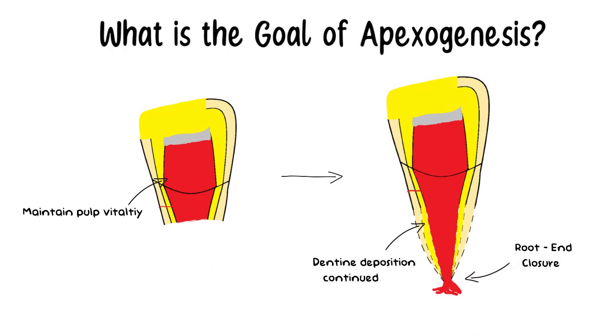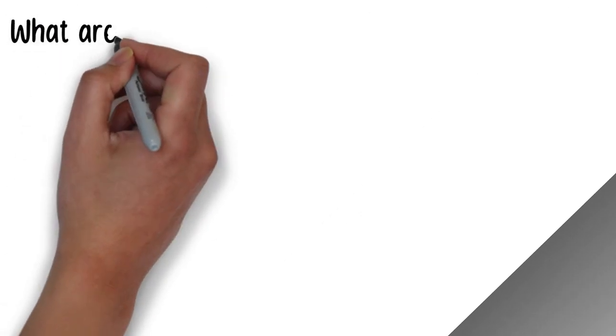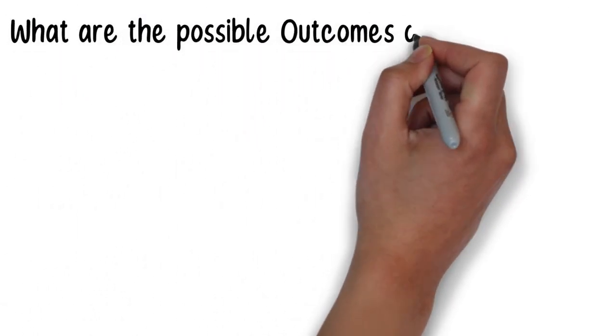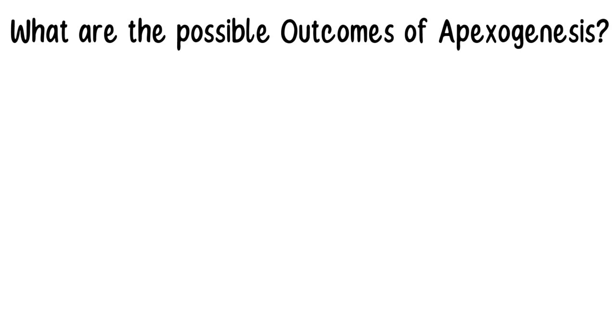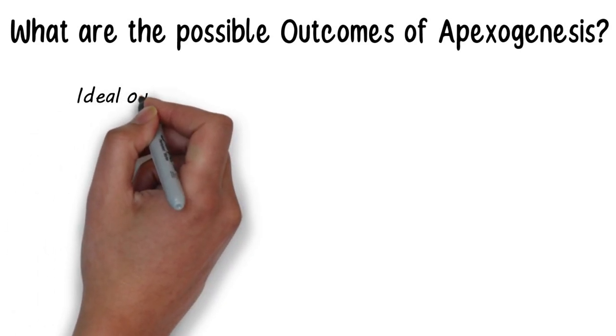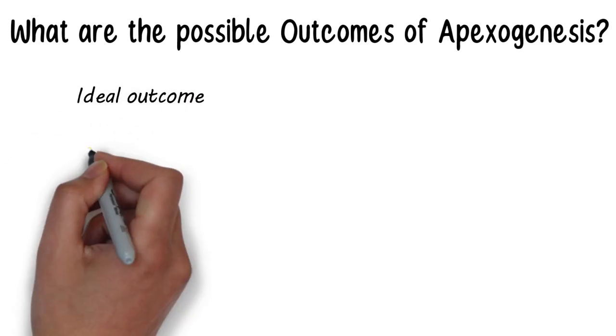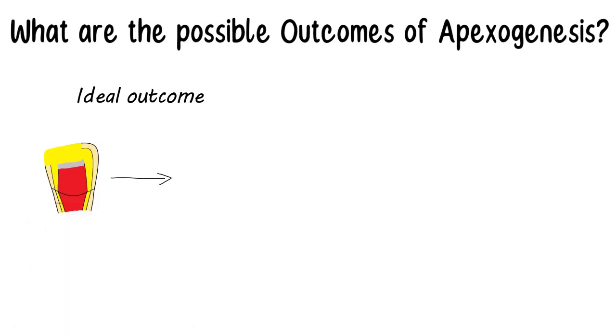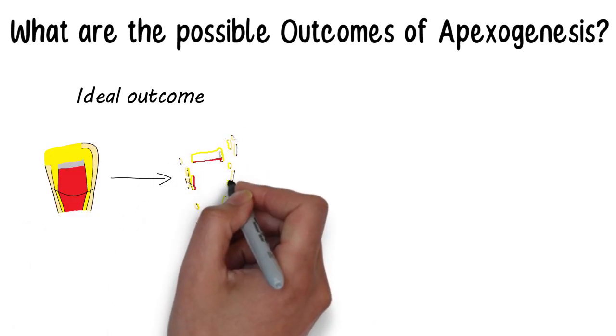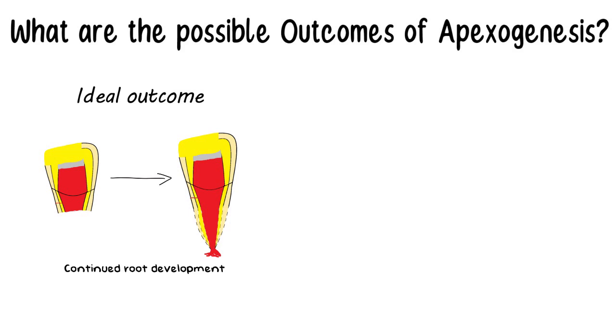So, in the end let's just briefly discuss what are the different outcomes of Apexogenesis. The ideal outcome of Apexogenesis therapy is the continued apical growth of the root with normal pulp. The pulp may remain vital for indefinite periods of time, therefore root canal treatment after root end closure has been achieved is not recommended.